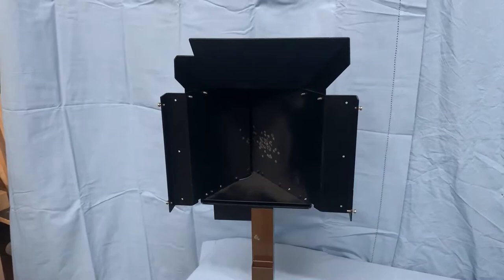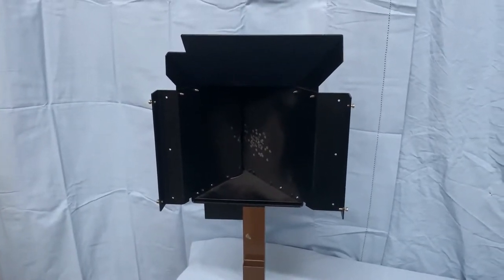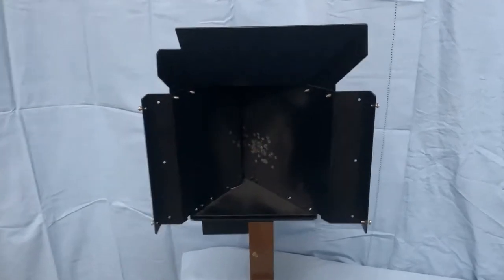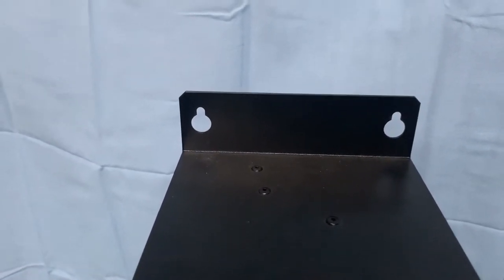So the first thing you want to do is mount your pellet trap. I mounted it on a short pedestal that we had in the office here. You can either mount it on a wall using the three mount screws. There's two on the top, one on the bottom.